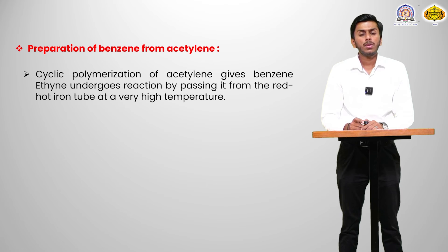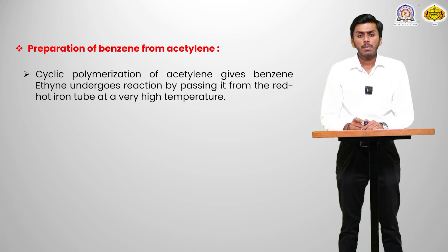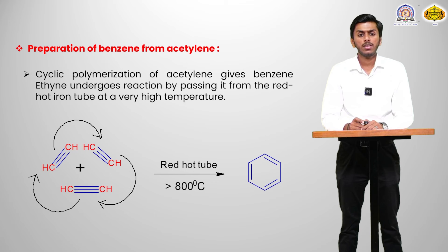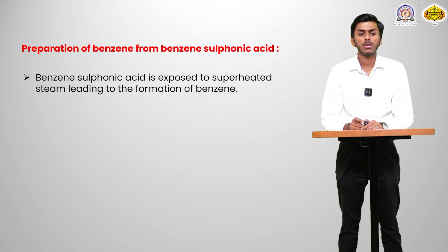Preparation of benzene from acetylene: cyclic polymerization of acetylene gives benzene. Acetylene undergoes reaction by passing through a red hot iron tube at a very high temperature. Three moles of acetylene at temperatures above 800 degrees Celsius gives benzene as a product.